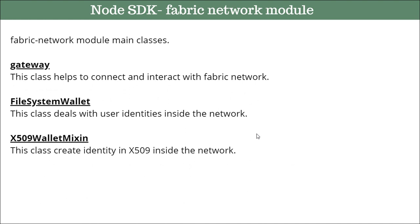Moving forward, let's look at how many classes you have in fabric-network. There are multiple classes, but this slide talks about three main ones. The very first class is the Gateway — a very important and basic concept. Whenever interaction happens from outside to your network, it happens with the help of the Gateway. This class helps you to connect with your network using a connection profile.